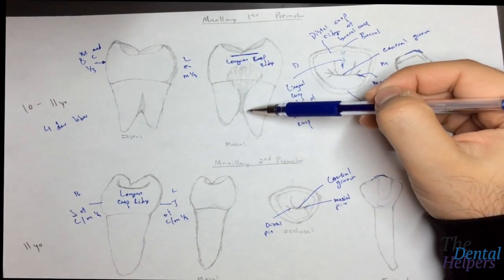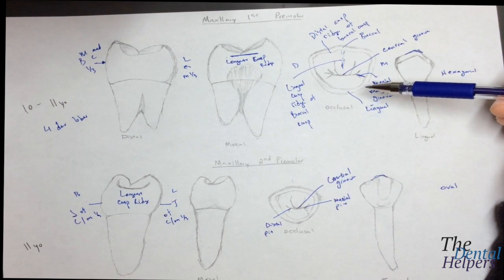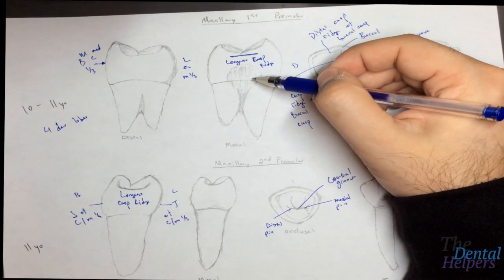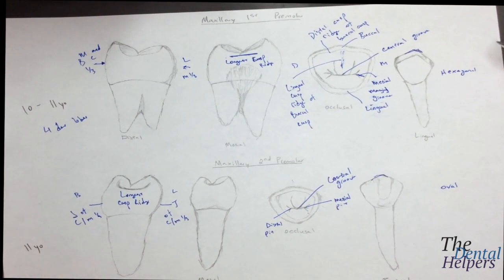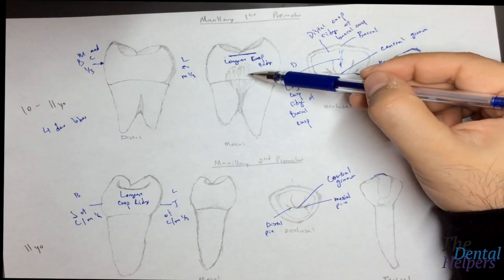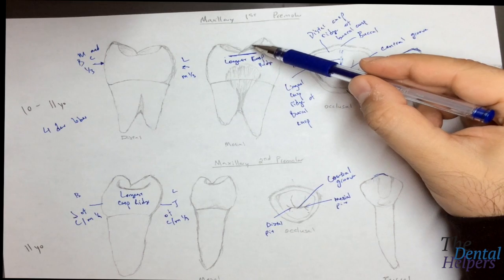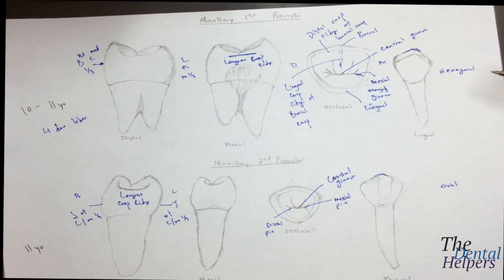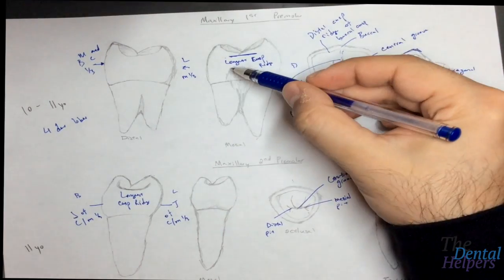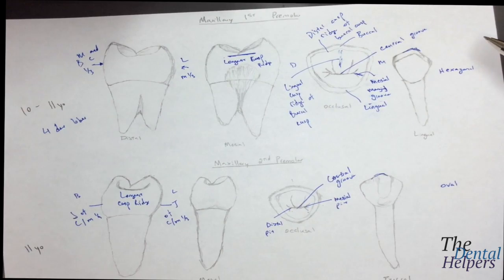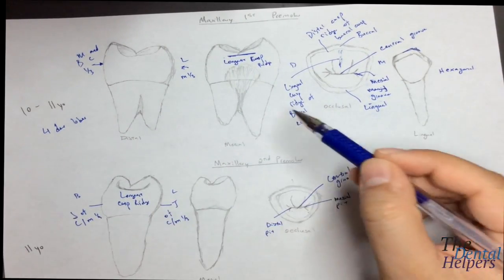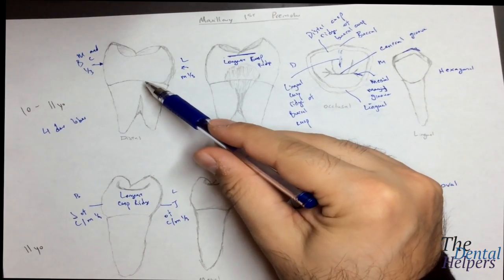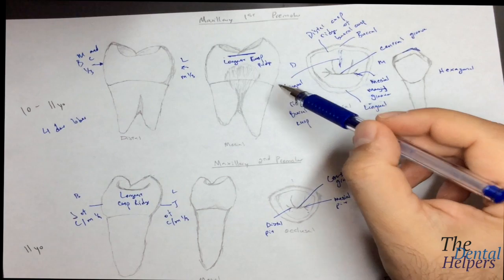Looking at the depression on the premolars: usually you see a depression on the distal side more so than the mesial. However, one exception is that the maxillary first premolar has a significant depression on the mesial side — this is known as the danger zone. This matters for root planing, scaling, or any restorative work like a class two, where you have to consider this mesial depression. On the maxillary second, you'll see a distal depression instead, but it's not as pronounced on the maxillary first.